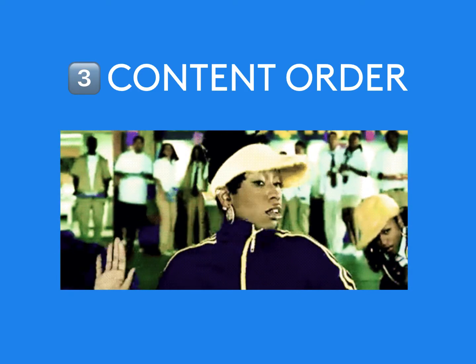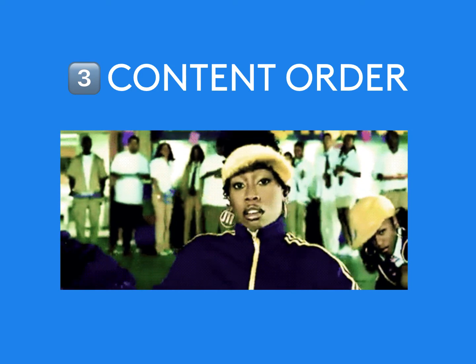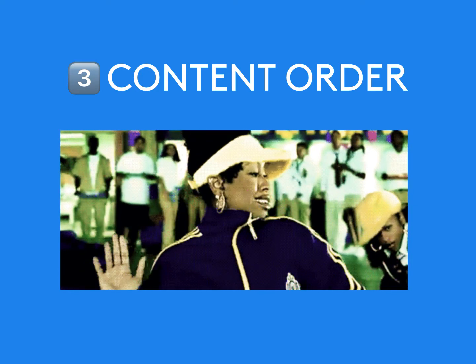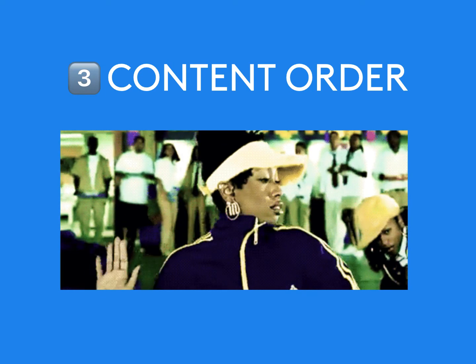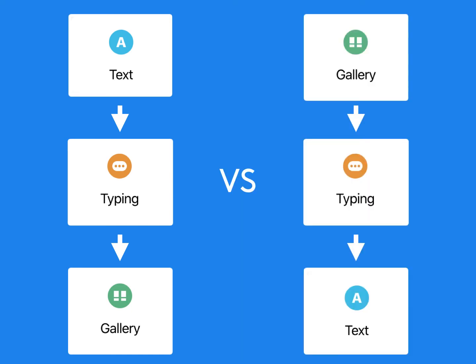Number three is content order — as Missy Elliott famously said, 'I put my thing down, flip it and reverse it.' This is all about changing up the content order of your chat experience. For example, you might have a flow where the user first receives a text message, then sees a gallery card showing a product like cookie dough ice cream. An example of split testing this would be showing the gallery card first, with the hypothesis that people are more likely to buy if they see the product first rather than later.